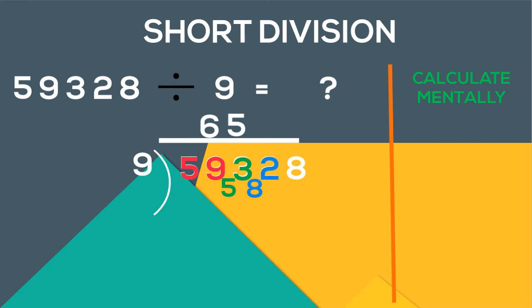Then we get 82. 9 goes 9 times in 82 with 1 remainder. 9 goes up and 1 comes down.